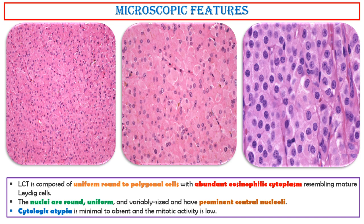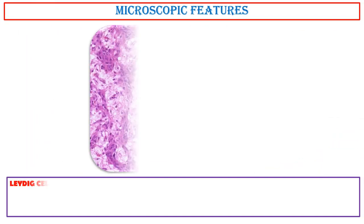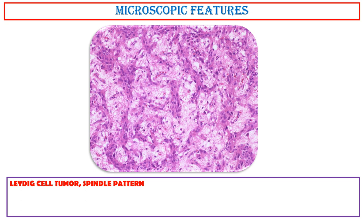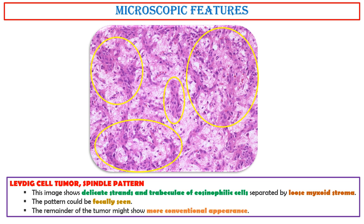Cytologic atypia is minimal to absent, and the mitotic activity is low. Leydig cell tumor spindle pattern: this image shows delicate strands and trabeculae of eosinophilic cells separated by loose myxoid stroma. The pattern could be focally seen; the remainder of the tumor might show a more conventional appearance.